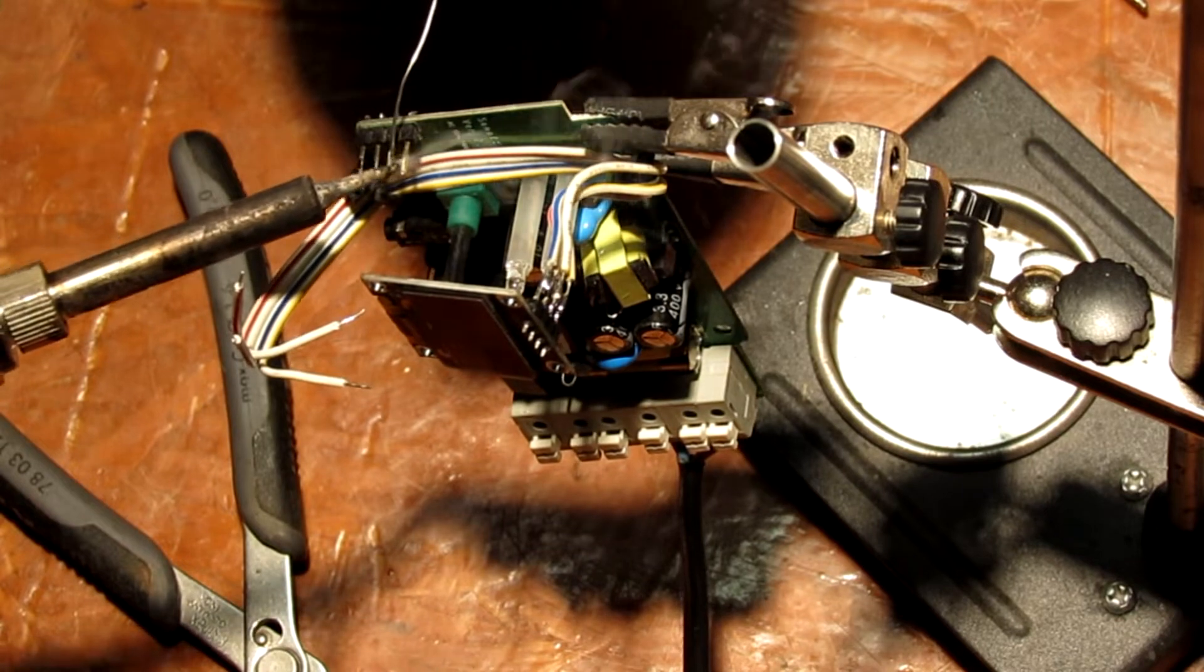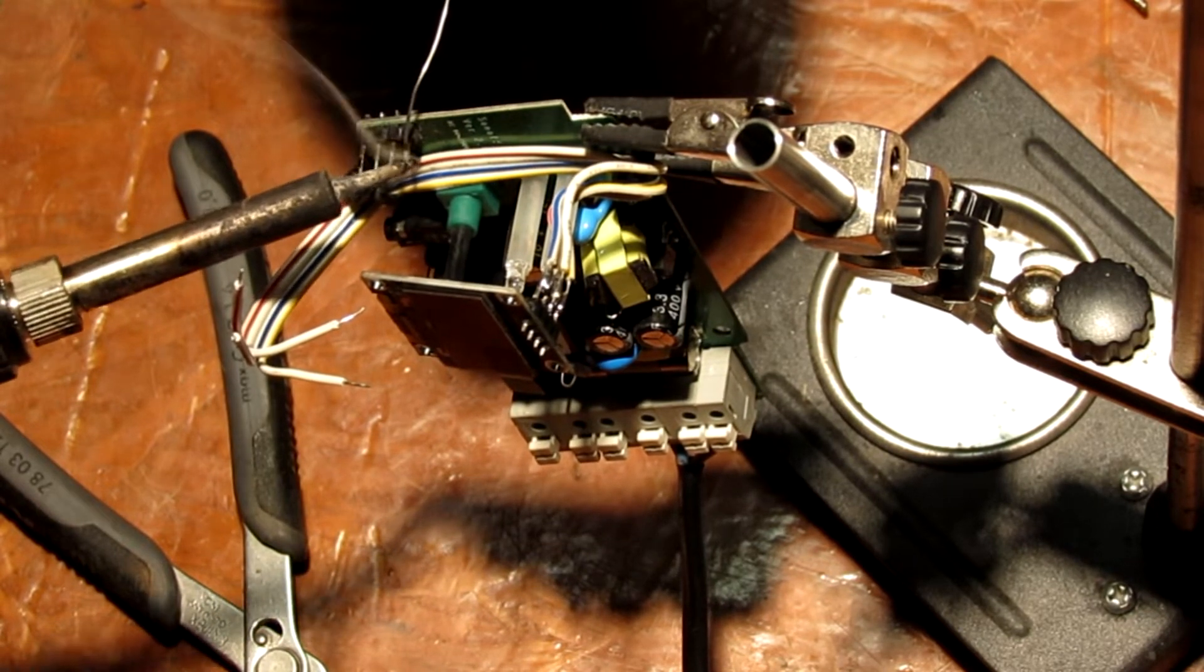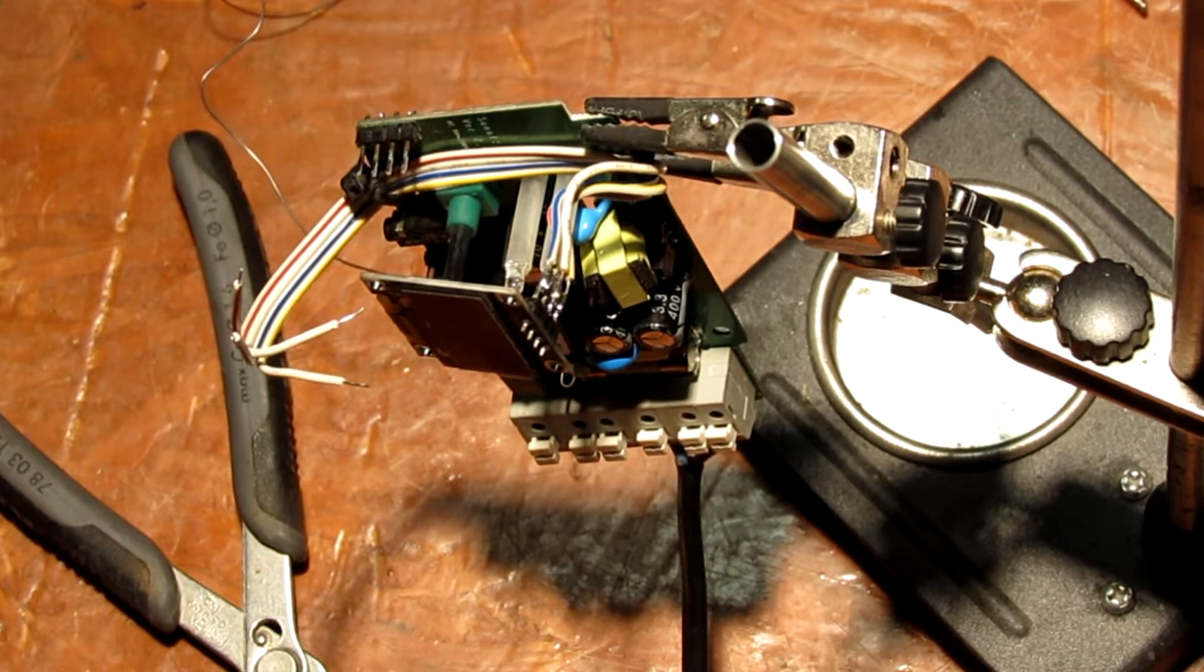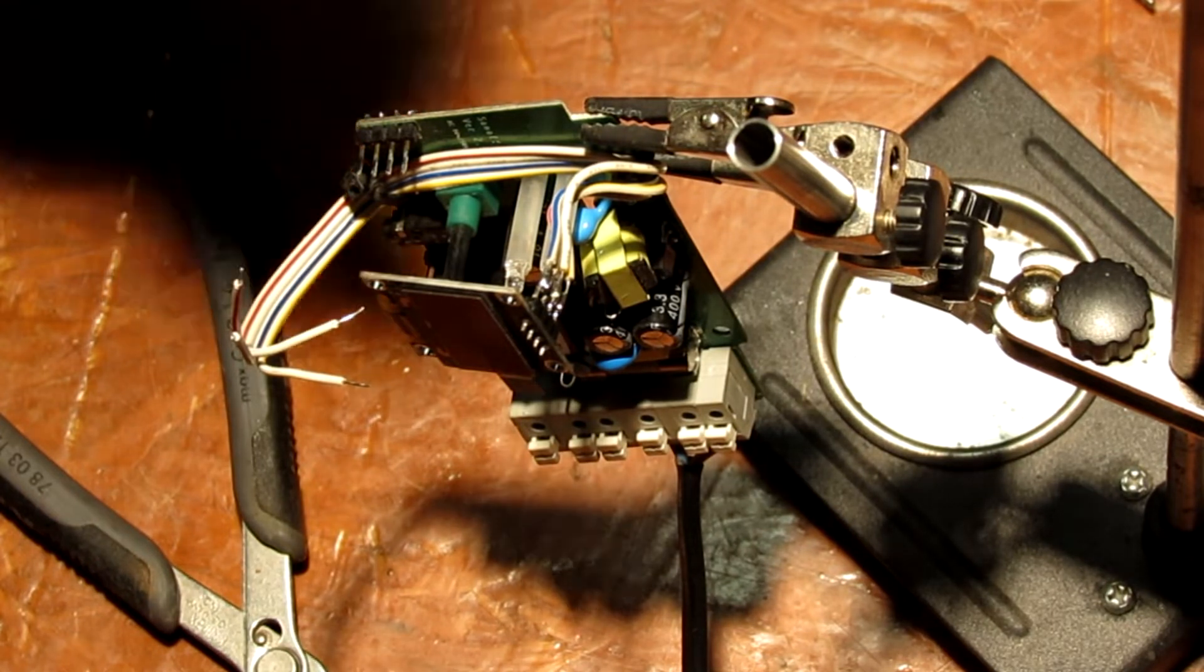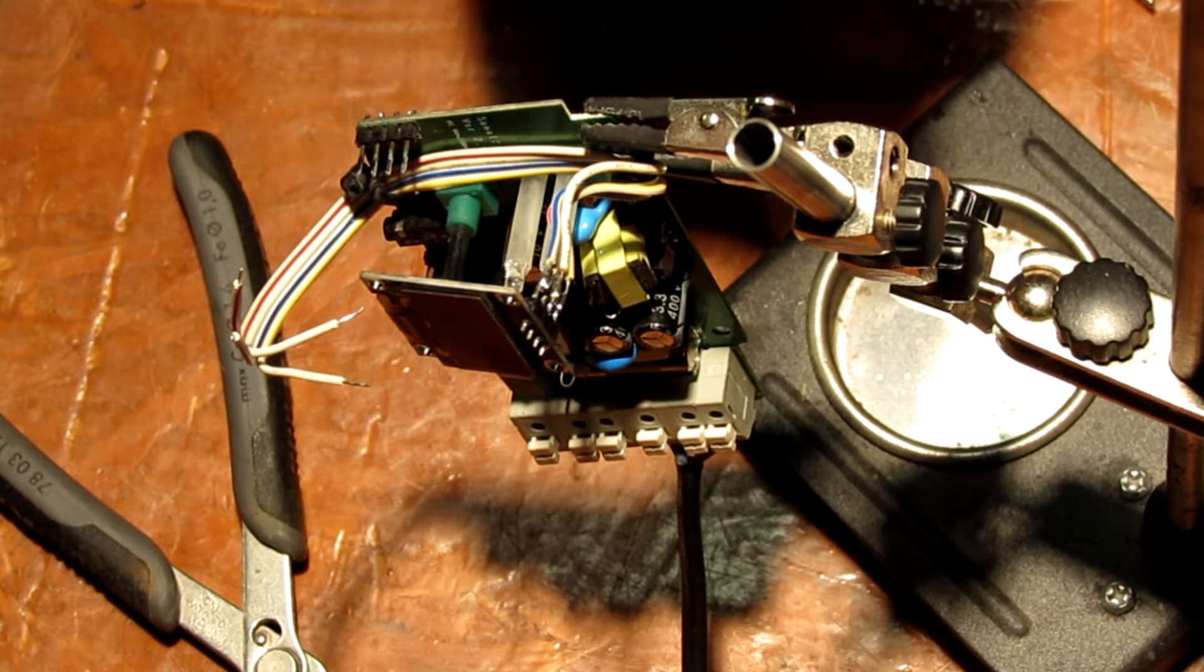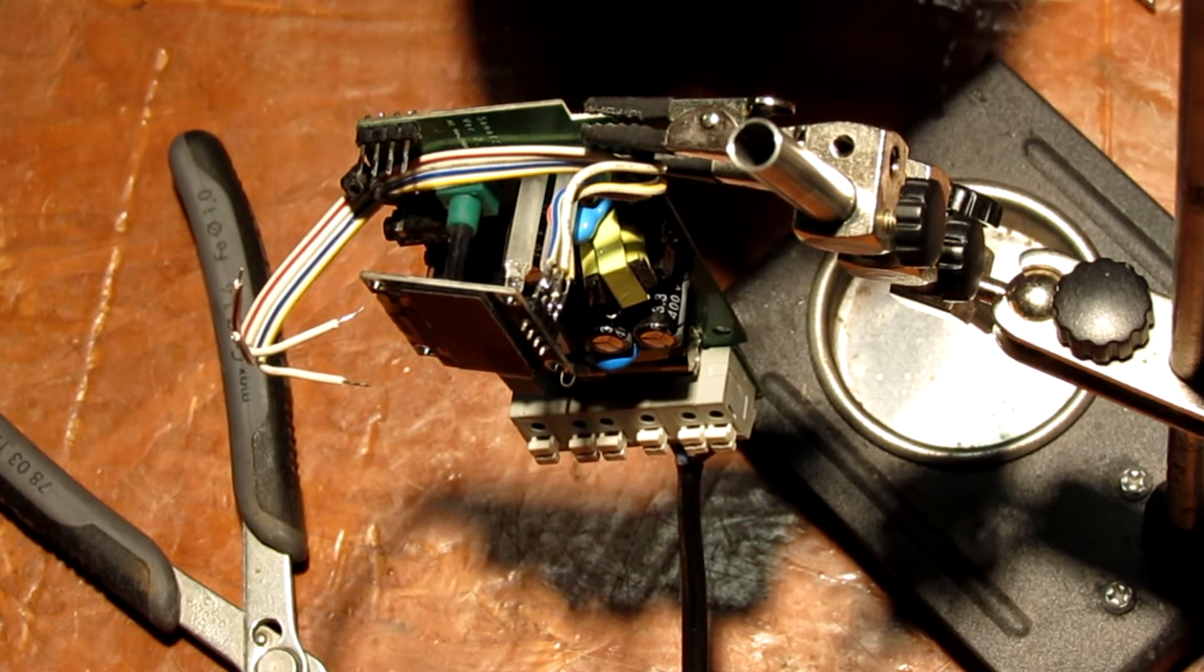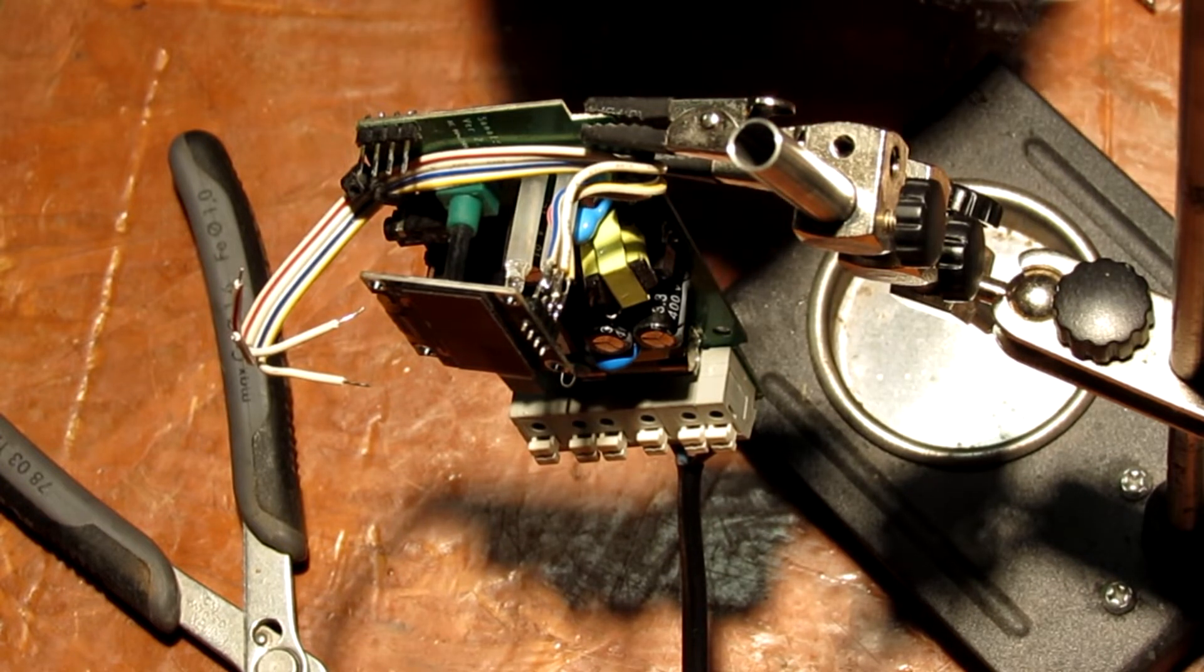Teraz widzicie jak będę tutaj lutował ten wyświetlacz, te przewody do wyświetlacza. Wyświetlacz OLED 3.3V. Pamiętajcie o tym, bo łatwo go uszkodzić. Chyba maksymalne napięcie jest 3.6V albo 3.8V. Trzeba zobaczyć notę katalogową, ale 3V to jest takie napięcie pracy wyświetlacza.